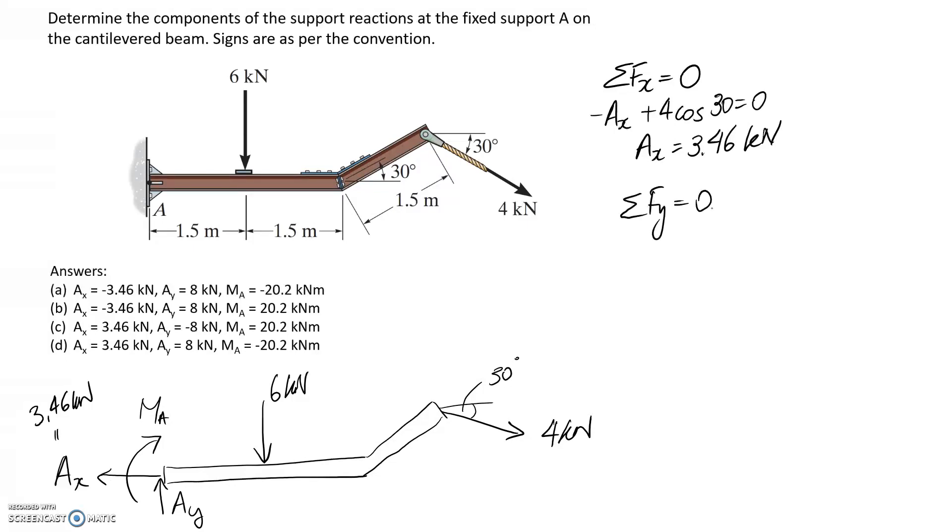Let's apply our next equilibrium equation, summing forces in the y direction. We've got Ay going up, we have 6 going down, and we have part of this one going down, so it's going to be the sine side of the triangle. If you type this into a calculator, you can find that Ay is equal to 8 kilonewtons. And it comes out positive, which means again the direction was correct, so it is upwards.